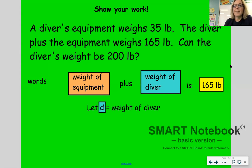So let's look at this as a situation. We have a diver's weight equipment. A diver's equipment weighs 35 pounds. The diver plus the equipment weighs 165 pounds. Can the diver's weight be 200 pounds?